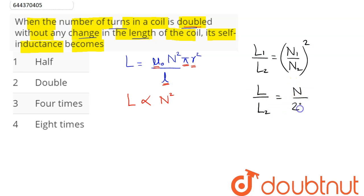So we have here L by L₂ is equal to 1 upon 4. So we can say the new inductance is equal to 4 times the initial inductance.